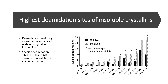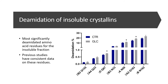Here we have the highest deamidation sites found on insoluble crystallins. This graph is consistent with other literature in showing that the primary modification of insolubility is deamidation. Asparagine has a greater extent of deamidation than glutamine, and the insoluble rates of deamidation are much higher than the soluble rates. The following graph highlights the most significantly deamidated amino acid residues within the insoluble fraction, comparing control crystallins to glucose crystallins, consistent with data from previous studies at the same residues.